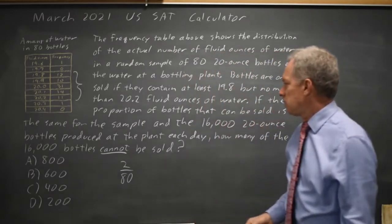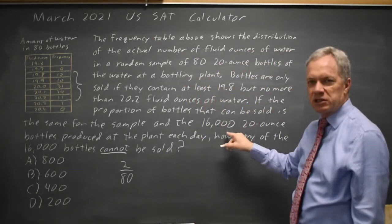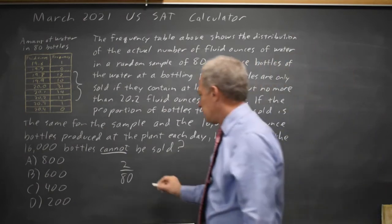And they're asking how many from the entire production run of 16,000 cannot be sold if it's the same proportion.